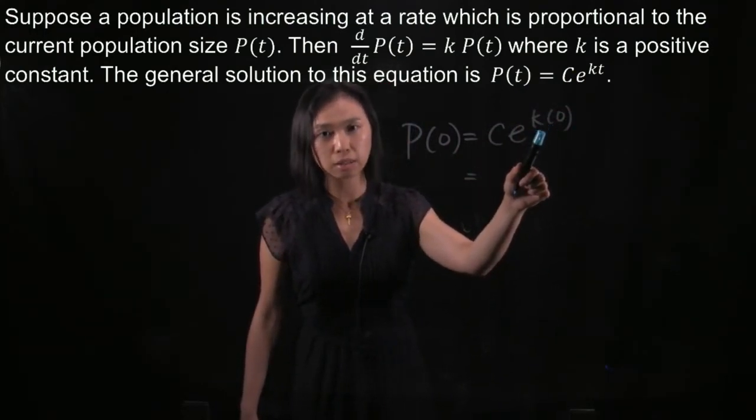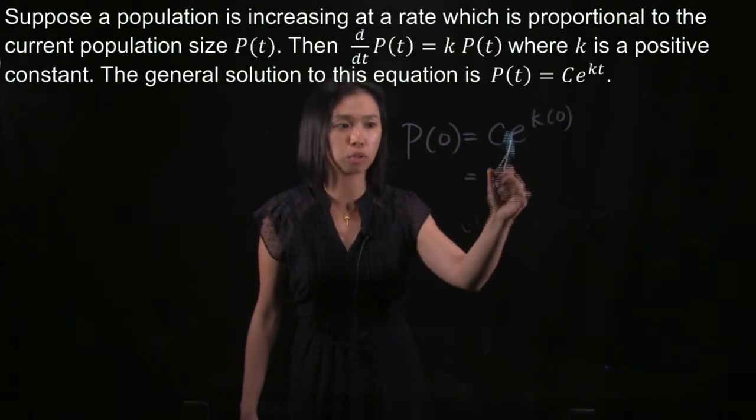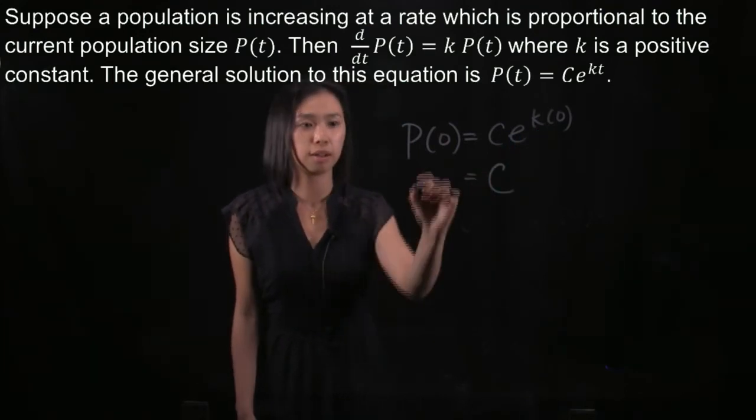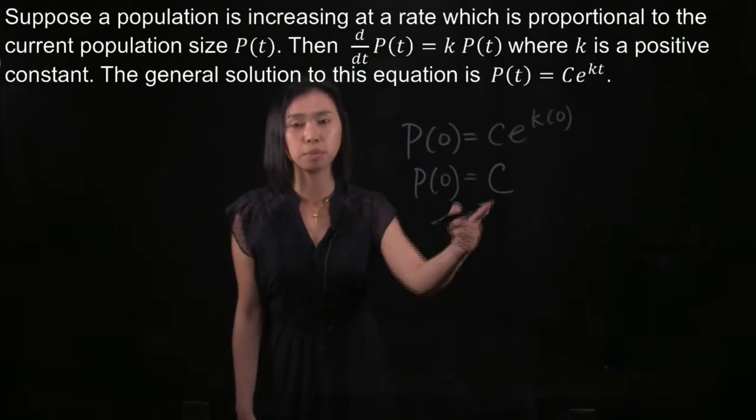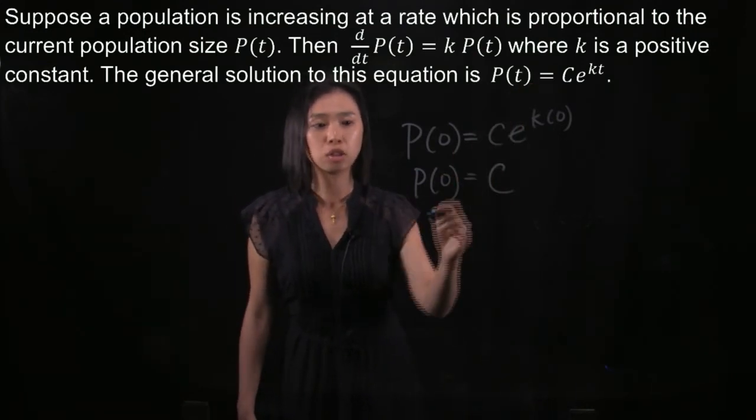So 0 times k is 0, e to the power of 0 is 1. So on the right-hand side you will have C, and then P at 0. And right now you have to find the C and then you can substitute this back to the general solution.